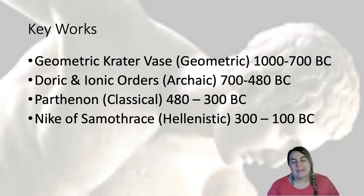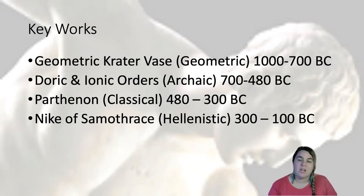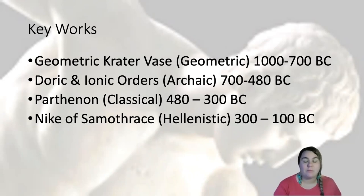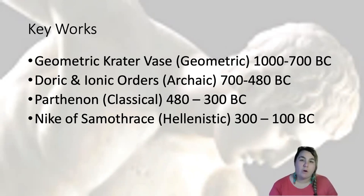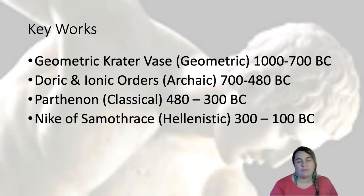Key works we're going to look at in this lesson are the geometric crater vase, from the geometric period of Greek art, which spans 1000 to 700 BC. Then we're going to look at the Doric and Ionic orders from the archaic period, 700 to about 480 BC. And then we're going to look at the Parthenon, part of classical Greek art from 480 to 300 BC, roughly that time period.